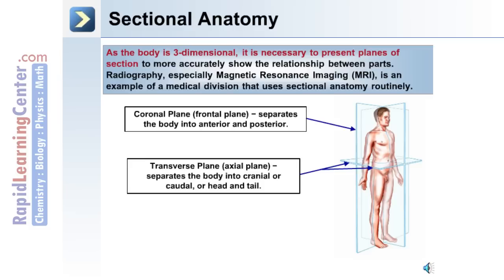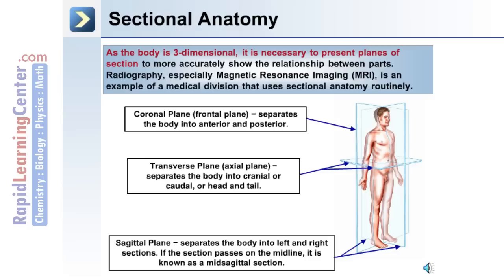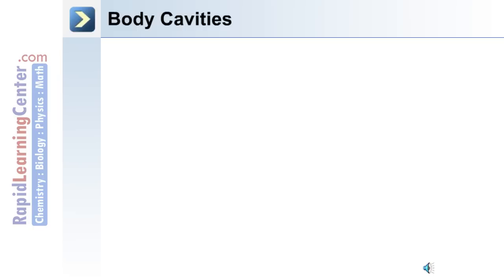The coronal plane is the frontal plane and it separates the body into anterior and posterior. The transverse plane or axial plane separates the body into cranial and caudal, or head and tail. The sagittal plane separates the body into left and right sections; if the section passes on the midline, it is known as the midsagittal section.